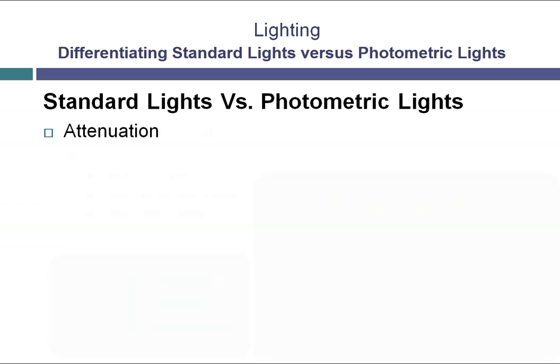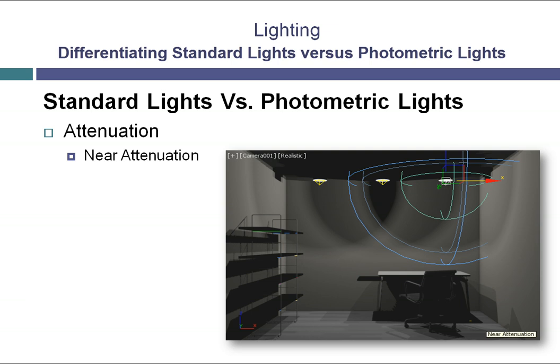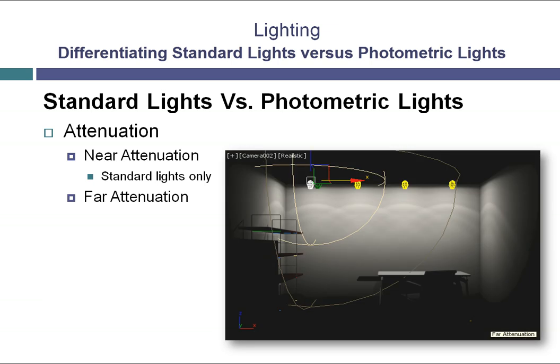Besides the decay value of a light, you are able to use the attenuation feature to make changes to how far the light travels in a scene. Near attenuation is a feature that is only available in standard lights. It provides a way to have a standard light start emitting light beginning at a certain distance away from the light and not at the source, with a start and end value to control how gradually the light starts emitting. Far attenuation, on the other hand, provides a method for dimming the light at a distance, allowing you to cut the decay manually and override the decay settings. This function is available for both standard and photometric lights, giving you more creative control over how you light your scene.